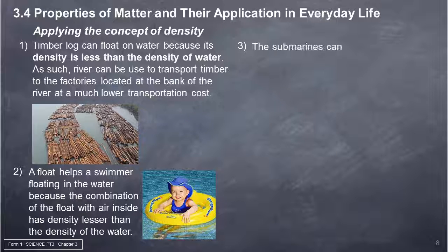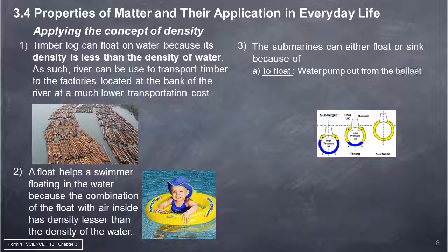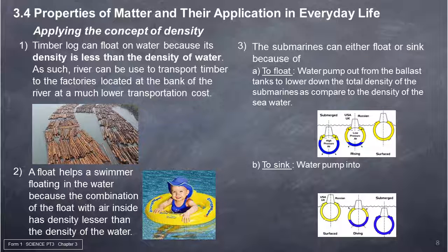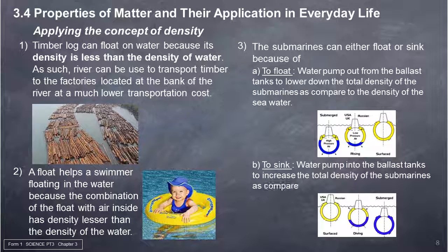3. Submarines can either float or sink. A. To float, water is pumped out from the ballast tanks to lower the total density of the submarine compared to the density of seawater. B. To sink, water is pumped into the ballast tanks to increase the total density of the submarine compared to the density of seawater.